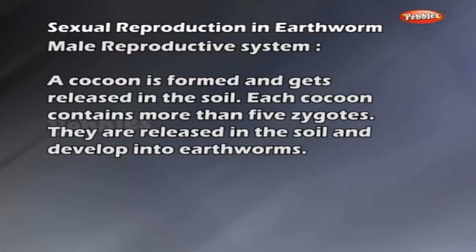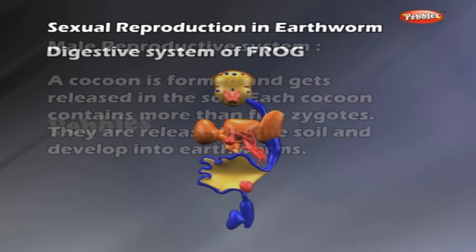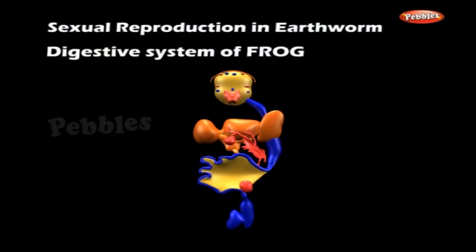The digestive system of the frog consists of the mouth cavity or buccal cavity, pharynx, esophagus, the stomach, duodenum, the ileum, rectum and cloaca.